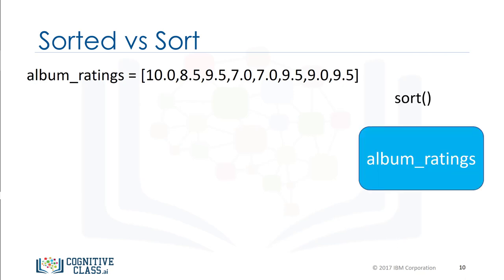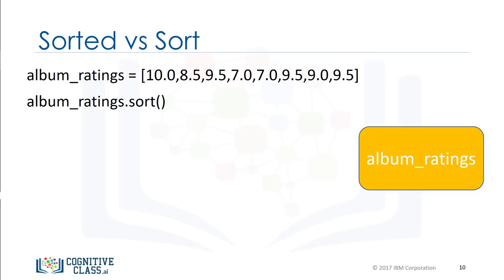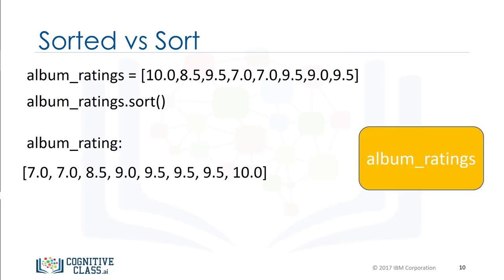Let's use the diagram to help illustrate the process. In this case, the rectangle represents the list album_ratings. When we apply the method sort to the list, the list album_ratings changes. Unlike the previous case, we see that the list album_ratings has changed. In this case, no new list is created.